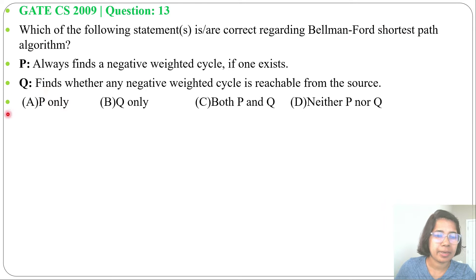Two statements are given with four options. Statement P: Always finds a negative weighted cycle if one exists. Statement Q: Finds whether any negative weighted cycle is reachable from source. P is false, Q is true.